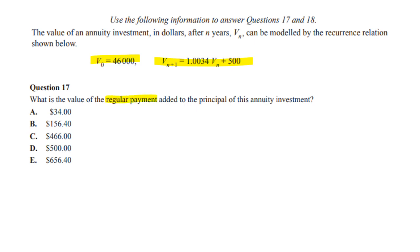Question 17 asks what is the value of the regular payment added to the principal of this annual investment. Looking at that equation, the part that says adding is the 500. Question 17 is quite easy.